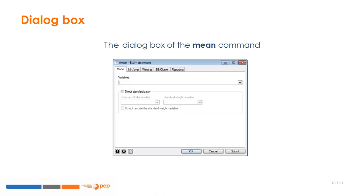The presentation of the dialog box depends on the specific command. For example, the dialog box for the mean command is shown here. You can select the variable for which you want to estimate the mean by simply selecting one or more variables in the variables box. You can also easily indicate various specific options directly in the dialog box.